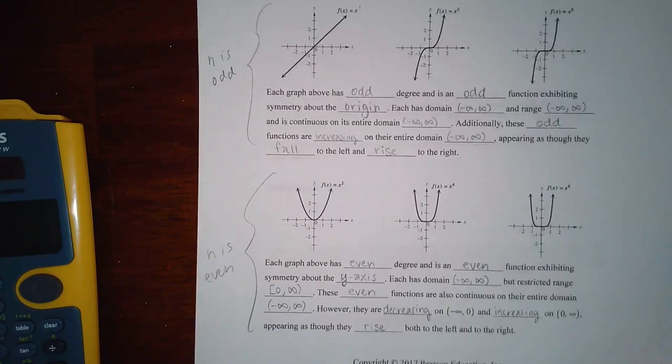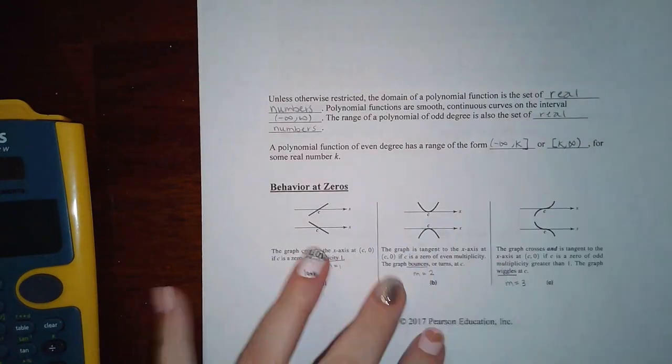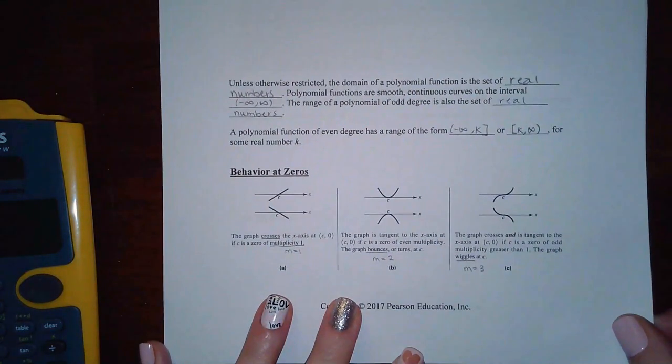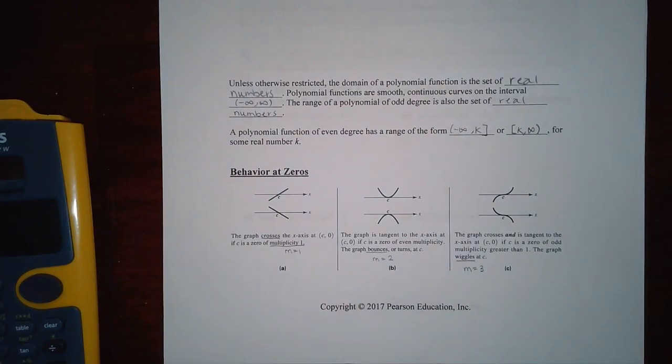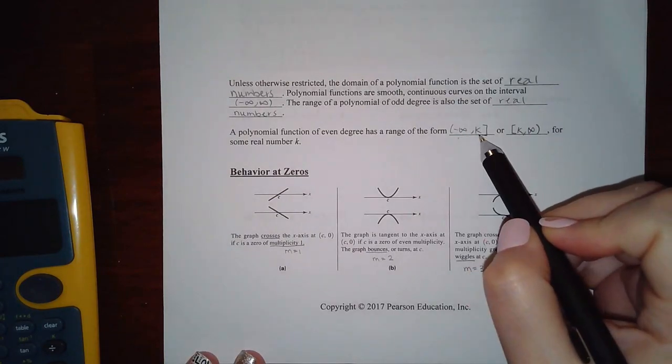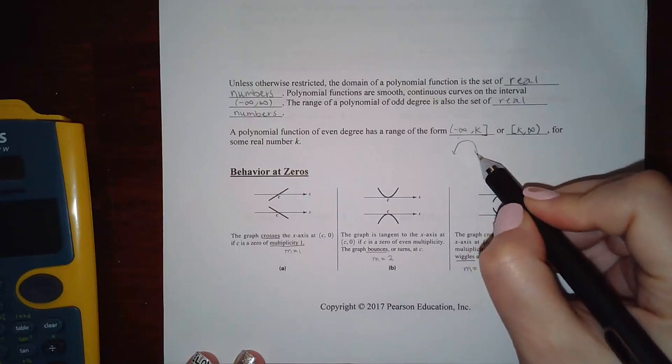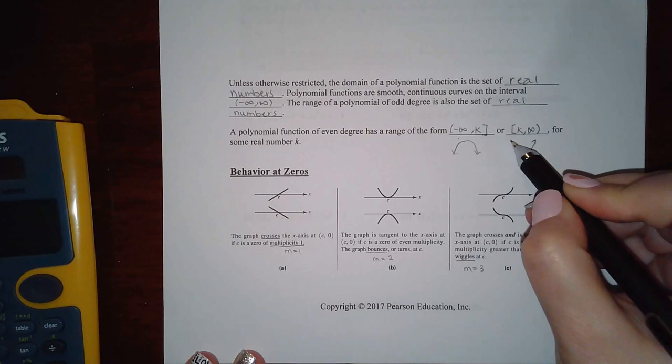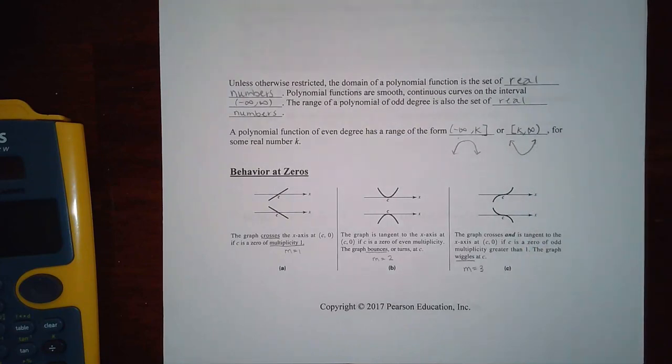Okay, now let's see what we have for the next bit of information. So the next bit of information says unless otherwise restricted the domain of a polynomial is the set of real numbers which in interval notation is negative infinity to infinity. The range of an odd degree is also negative infinity to infinity and the range of an even degree will be negative infinity to k if it's going downward or if it's going upward it will be from that k value to infinity.